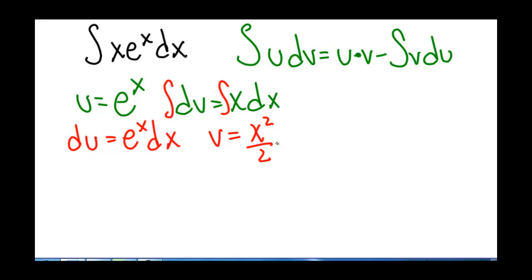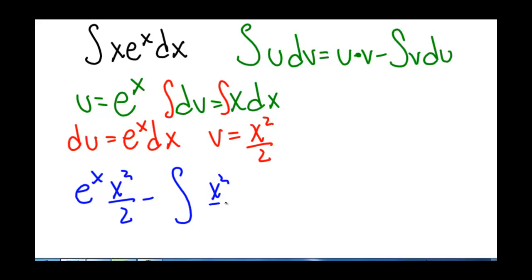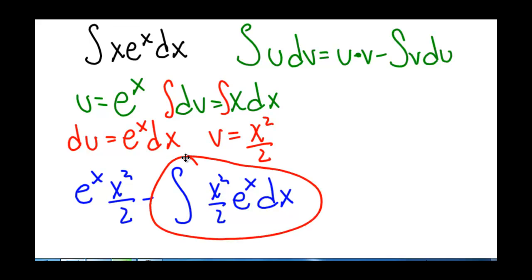When we put this back into our formula, we get u times v — so e to the x times x squared over 2 — minus the integral of v times du, which is x squared over 2 times e to the x dx. Looking at this, we know we're going to have to solve this integral, but it looks more difficult than what we started with because we now have a squared term. So that tells us we didn't choose a very good u and dv.